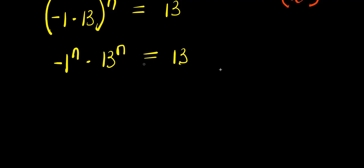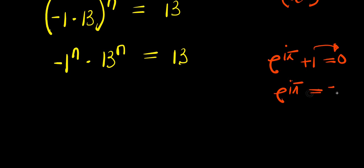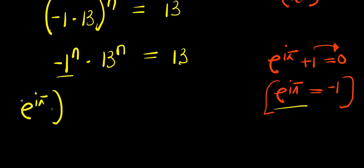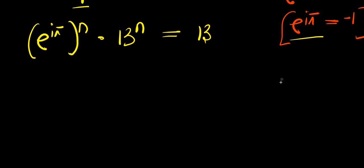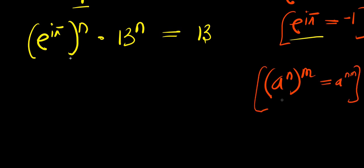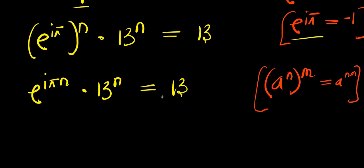So we consider this other identity: e power i times pi plus 1 equals 0. We take 1 over here, giving us e power i times pi equals negative 1. We apply that here, meaning we replace this negative 1 with e power i times pi, so we have e power i times pi raised to the power of n, times 13 power n equals 13. Now, if you have e power m raised to the power of n, this equals e power m times n. Applying that, we simply have e power i times pi times n, times 13 power n equals 13.